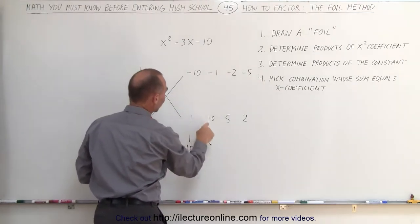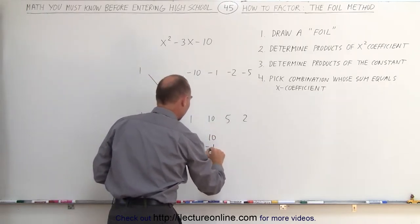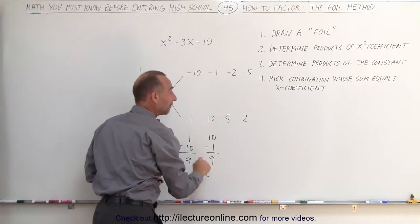Next, we multiply 1 times 10 and 1 times negative 1. That gives us a positive 9, which is not the right number because I don't have a negative 3 there.